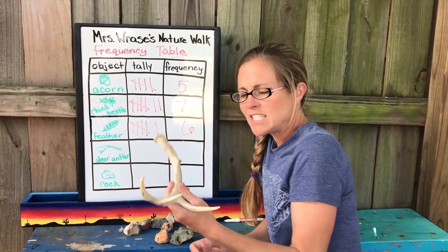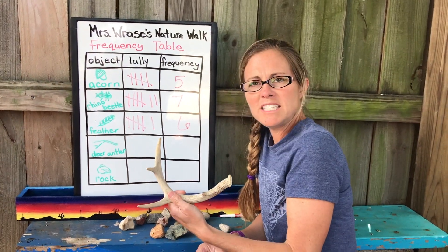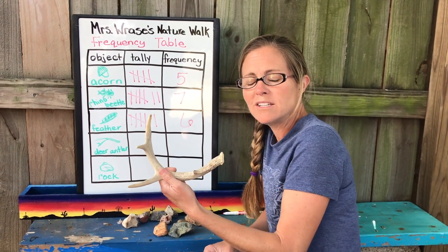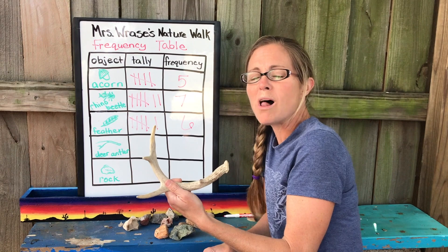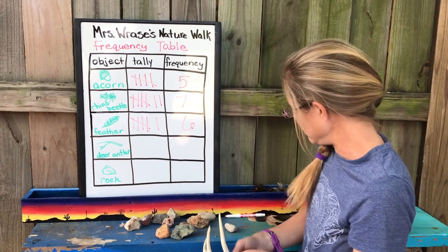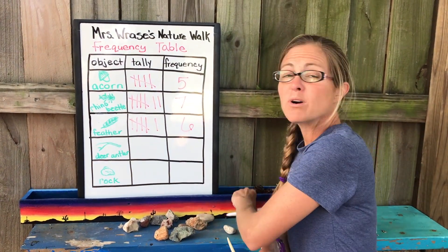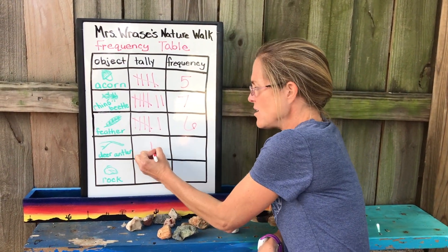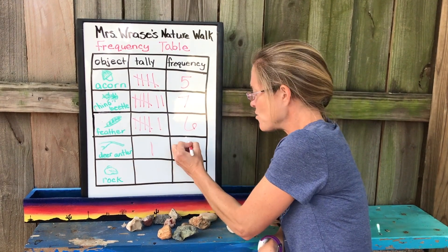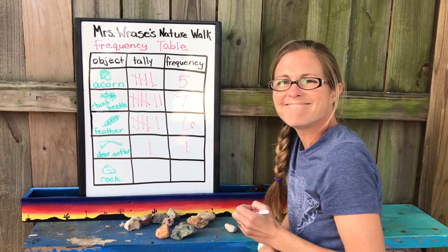Next, we move on to our deer antler. We have one super cool deer antler — that's an easy one. We're just gonna show one and a frequency of one.